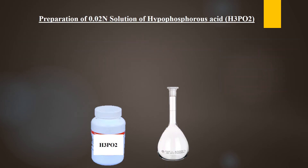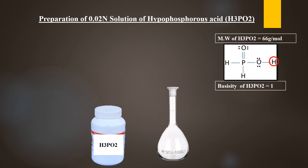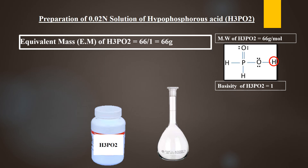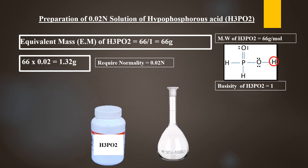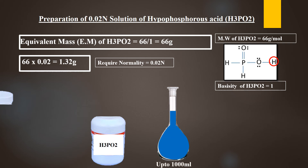To prepare 0.02 normal solution of hypophosphorous acid, find out its molecular weight, which is 66 grams per mole. Draw its structure and find out the replaceable hydrogen ions — there is only 1 replaceable hydrogen ion, so the basicity of hypophosphorous acid is 1. Divide 66 by 1 to get an equivalent mass of 66 grams. Multiply 66 by 0.02 since we want to prepare 0.02 normal solution — the answer is 1.32 grams. Take 1.32 grams of hypophosphorous acid, dissolve it in water, and dilute the solution up to 1000 milliliters. This will be 0.02 normal solution of hypophosphorous acid.